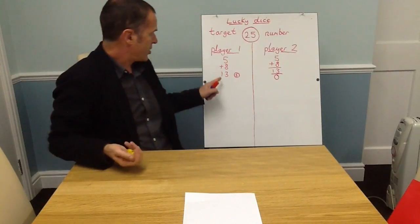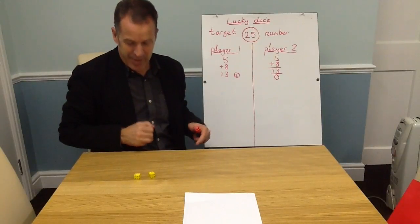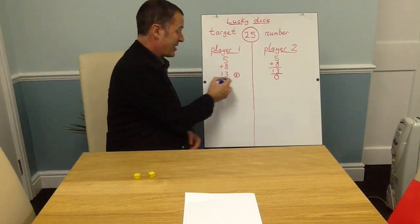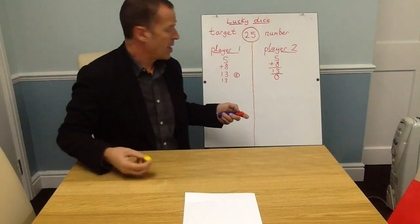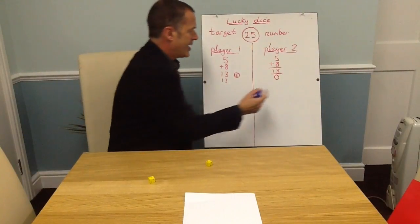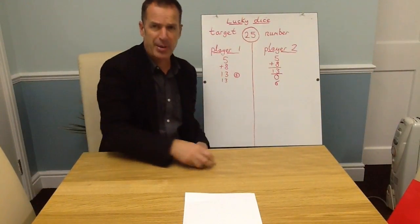Player one's turn, starting on thirteen. Six and a one—it means I stay on thirteen. That's the end of my go. Player two, their turn, they're on naught. Three and three is six, so we'll keep that. And now we're going to go again. Three and two is five. That will make eleven. Now do I stick or do I carry on? I think I'm going to stick on that one.